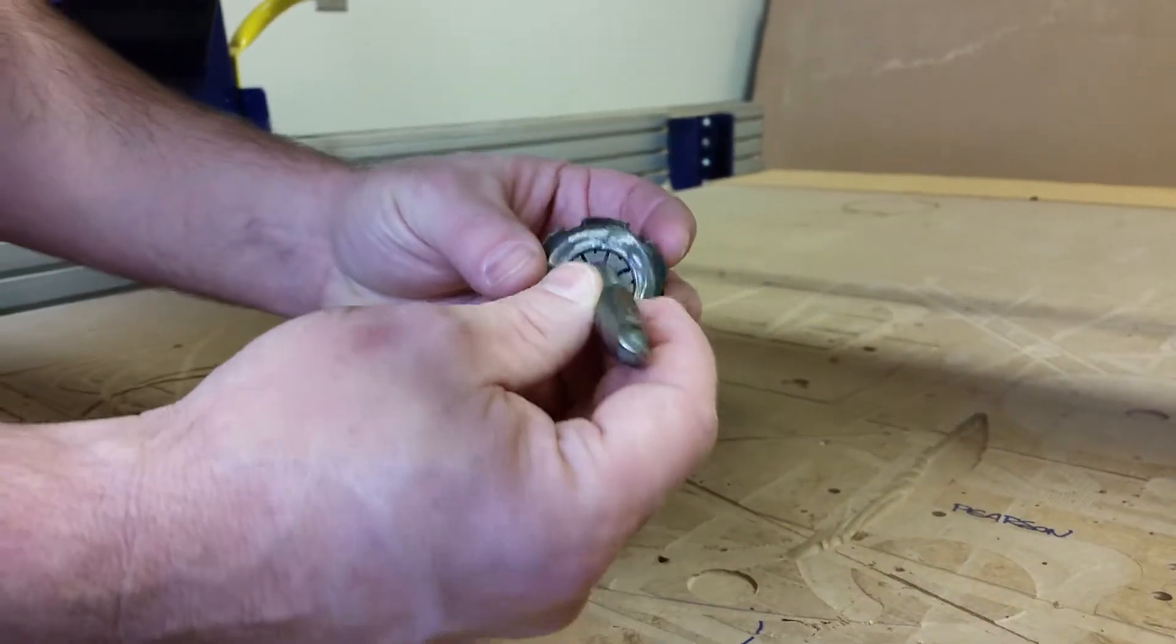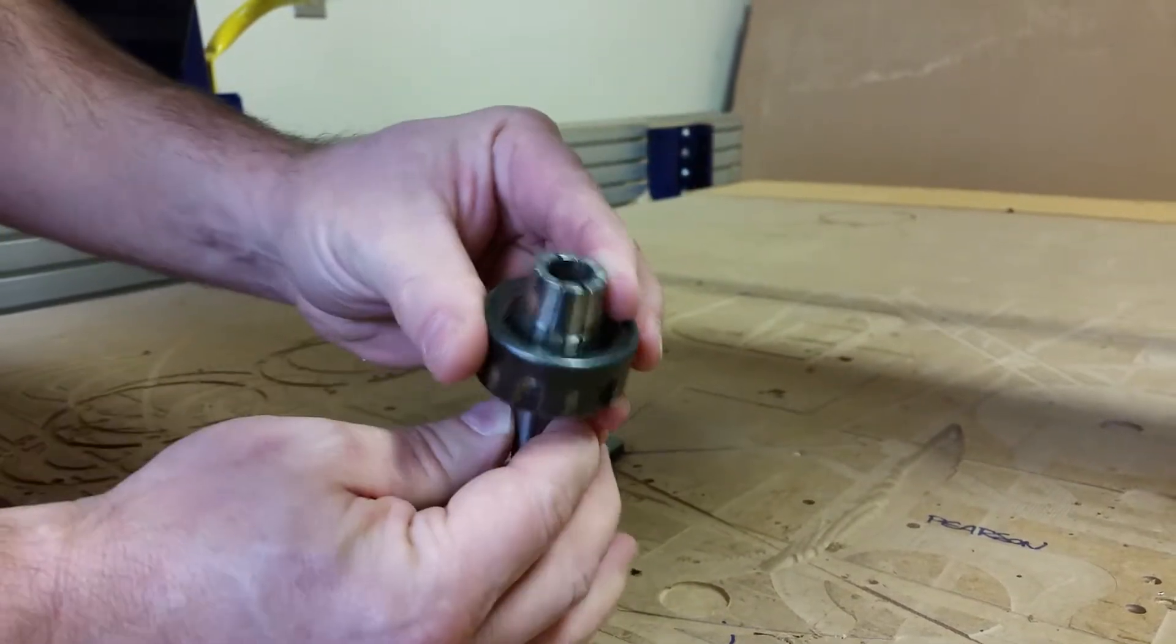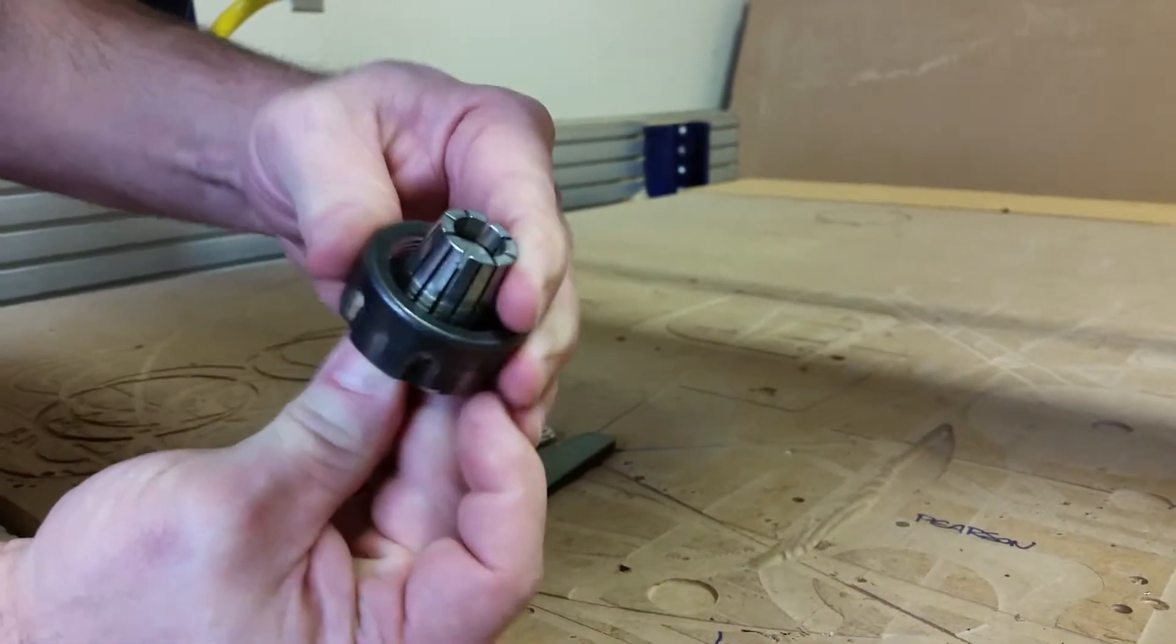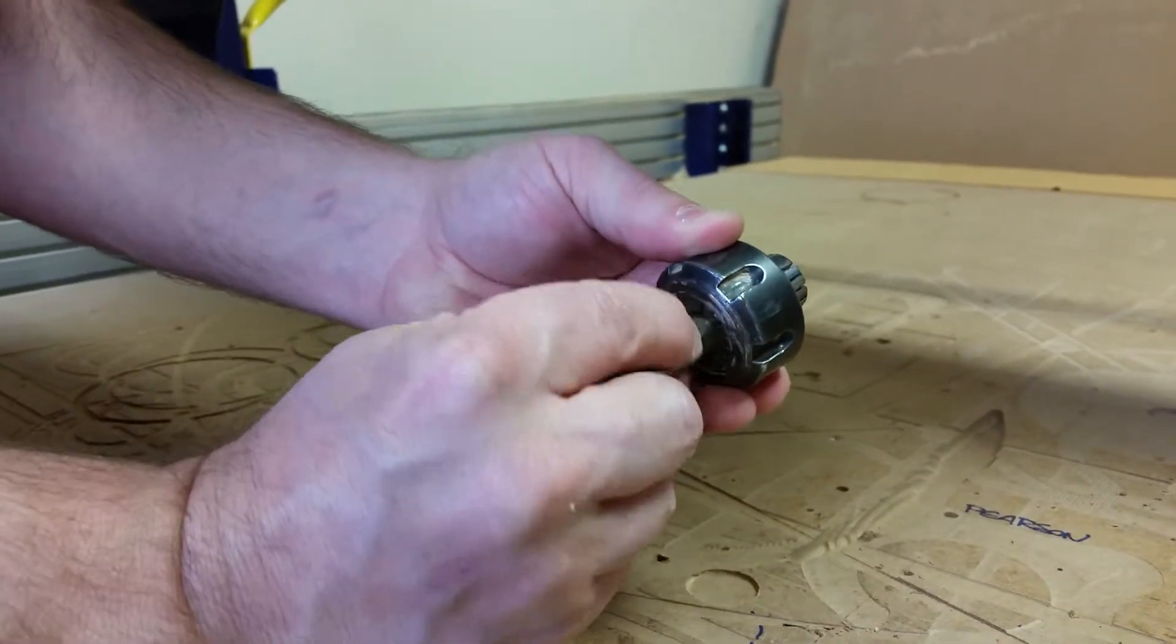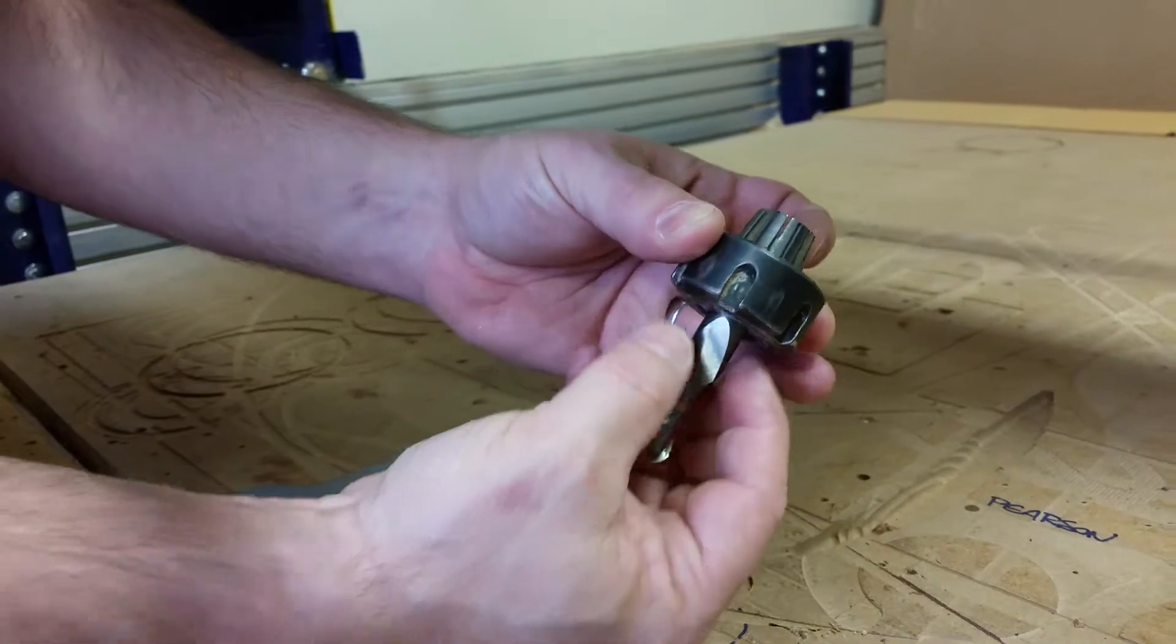Next we're going to take our tool and slide it into our collet. Remember we want to fill up at least 80% of our collet, but we don't want our flutes touching the inside of the collet. We want those out a little bit.